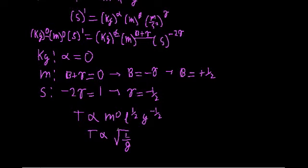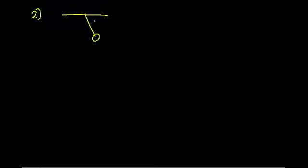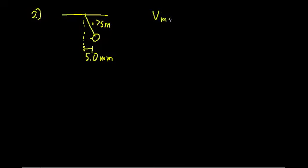Let's move on to our next example, Example 2. This is from the same book. We have a simple pendulum with a length equal to 0.75 meters. We initially displace this pendulum by moving it horizontally a distance of 5.0 millimeters. What we want to find is the maximum speed it has and the time at which it first reaches this maximum speed — let's call that T star.